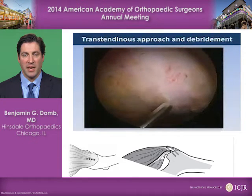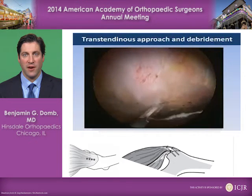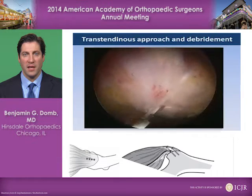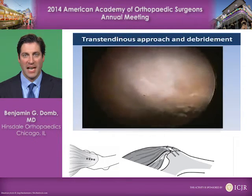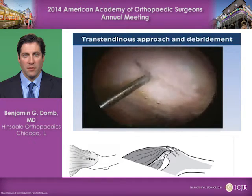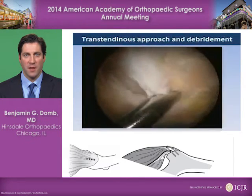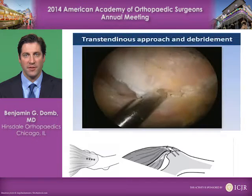A longitudinal split is made using a beaver blade or sharp tool, in line with the fibers of the tendon. Note in the diagram at the bottom, the tear is most commonly on the deep surface, where the tendon actually attaches to the bone. In order to access that deep surface for a partial tear, we work through this transtendinous split. Through the split, we can debride the torn and damaged portions of the tendon and leave the good portions, which are attached more distally on the lateral facet.